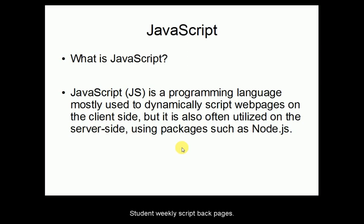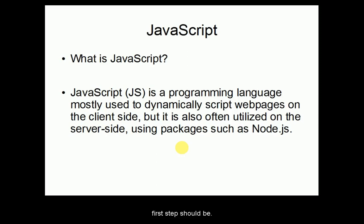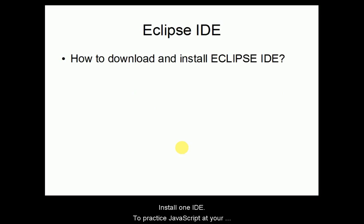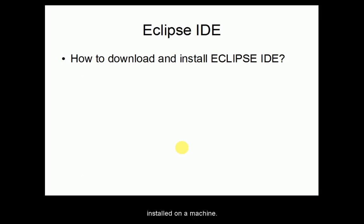From this definition it's clear that JavaScript is a programming language which we can use to dynamically script web pages. Now what is the plan to learn JavaScript step by step? The first step should be to install an IDE — Eclipse IDE. An IDE is an Integrated Development Environment. To practice JavaScript and learn programming concepts — like addition of two numbers, declaration of variables, functions, arrays — we should have Eclipse IDE installed on our machine.